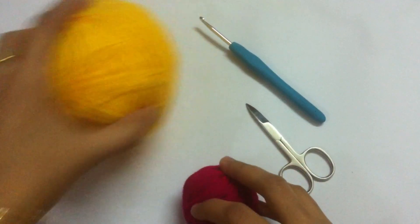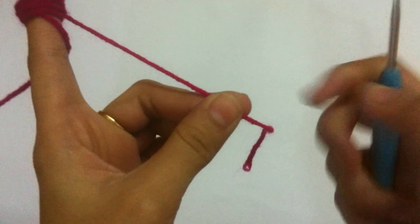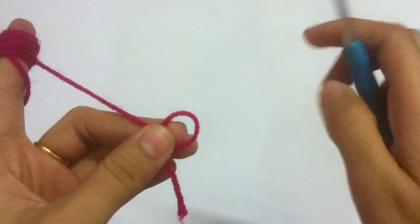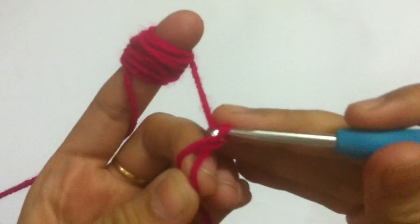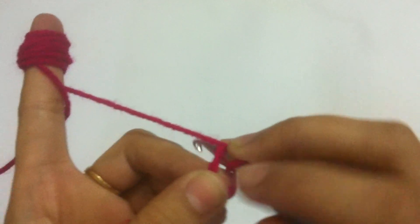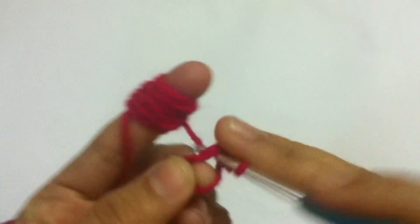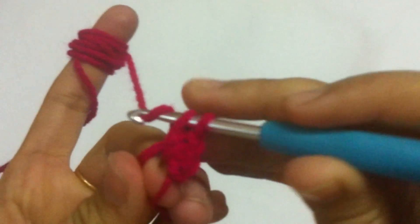For the center part, I'll be using this maroon color. You are going to start with the magic circle. In the magic circle, we are going to make six single crochets. One, two, three, four, five, and six.